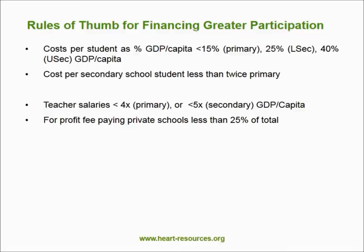Teacher salaries are of course a very important part of the cost equation and the largest element. Another way of looking at this is that teacher salaries at primary school level cannot be much more than about 4 times GDP per capita, or at secondary level about 5 times GDP per capita, for the financing to be sustainable within a realistic envelope. Alongside that, the contribution made by for-profit fee-paying schools is unlikely to be much more than about 20% of enrolment and 20% of the nominal costs of providing universal access. The reasons for this go back to teacher salaries on the one hand and household incomes and their distribution on the other.